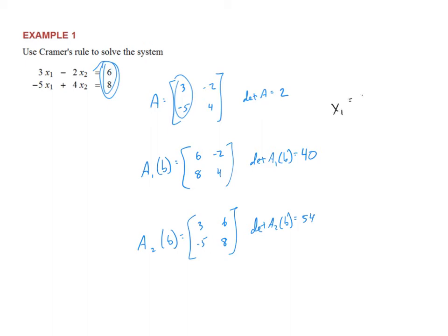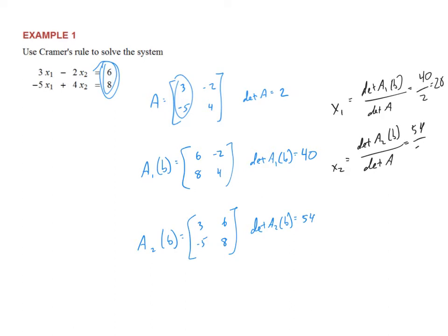X1 is equal to the determinant of A_1(B) divided by the determinant of A, and X2 is the determinant of A_2(B) divided by the determinant of A. In the first case we get 40 over 2, which is 20. And in the second one we get 54 divided by 2, which is 27. So X1 is 20 and X2 is 27. That's my solution without doing any row operations whatsoever, only by computing determinants.